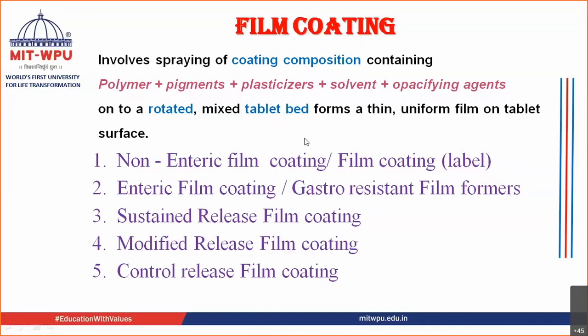We saw that there are different types of film coating: non-enteric film coating, enteric film coating, sustained release film coating, modified release film coating, and controlled release film coating. If you see the literature, there are basically two types of film coating — non-enteric film coating and enteric film coating — and the others may or may not be in the literature.